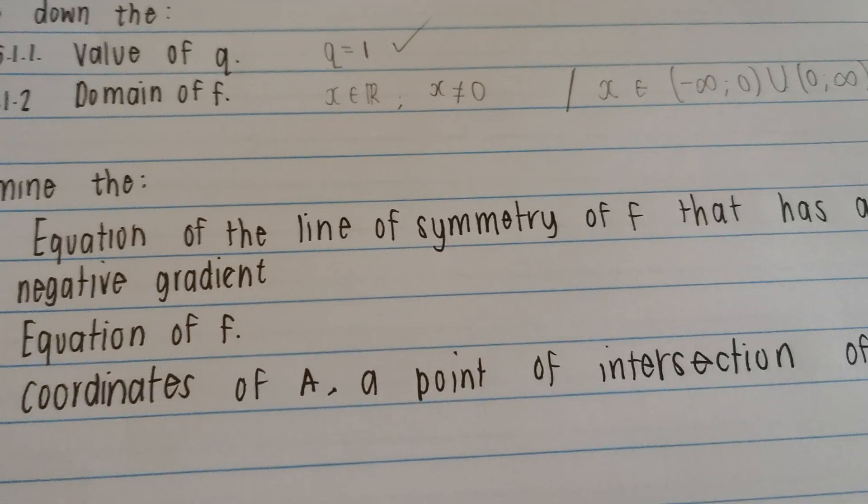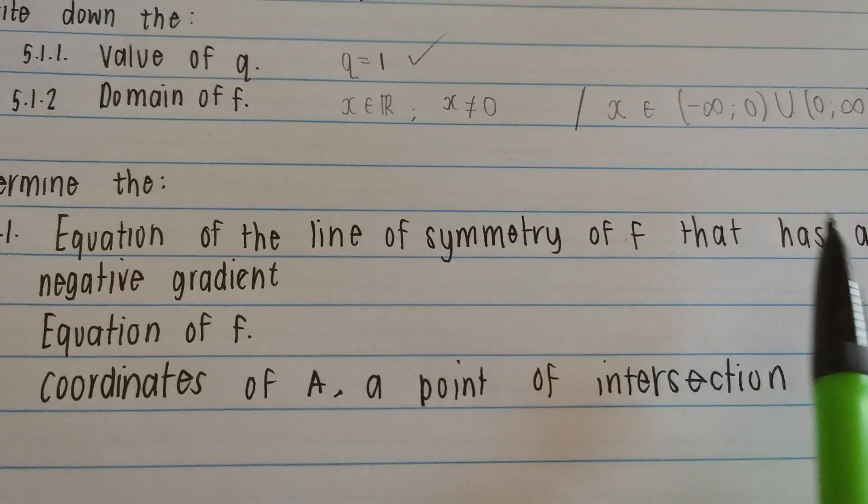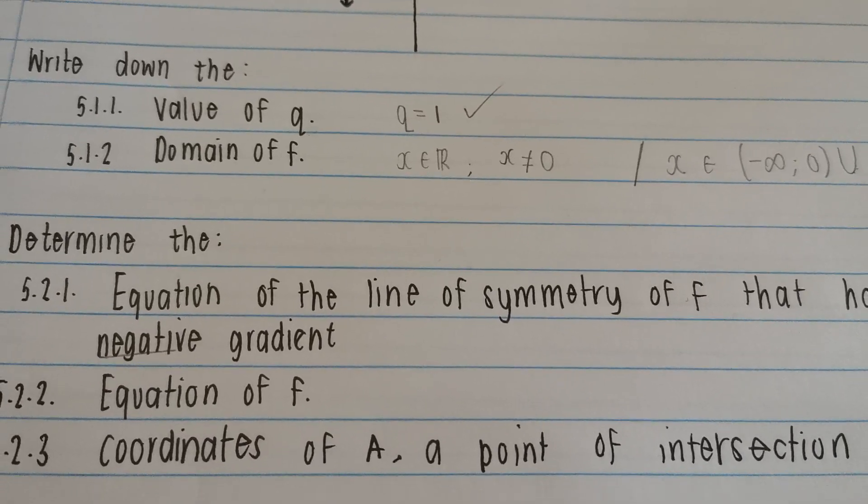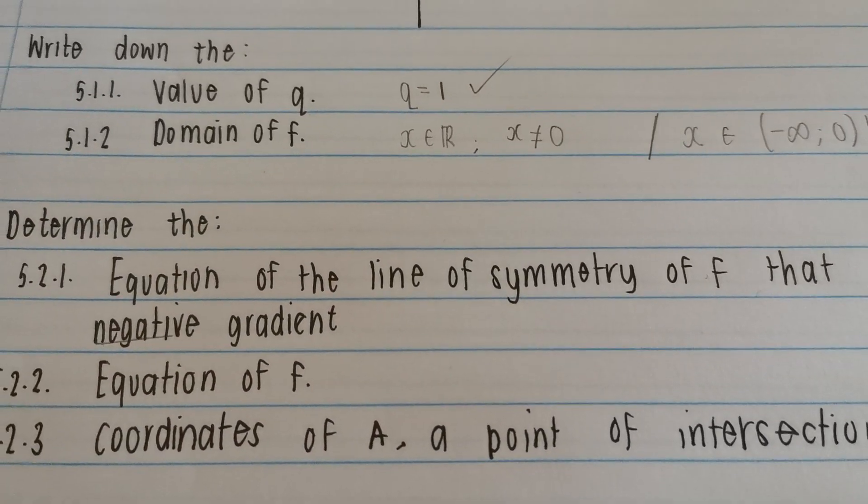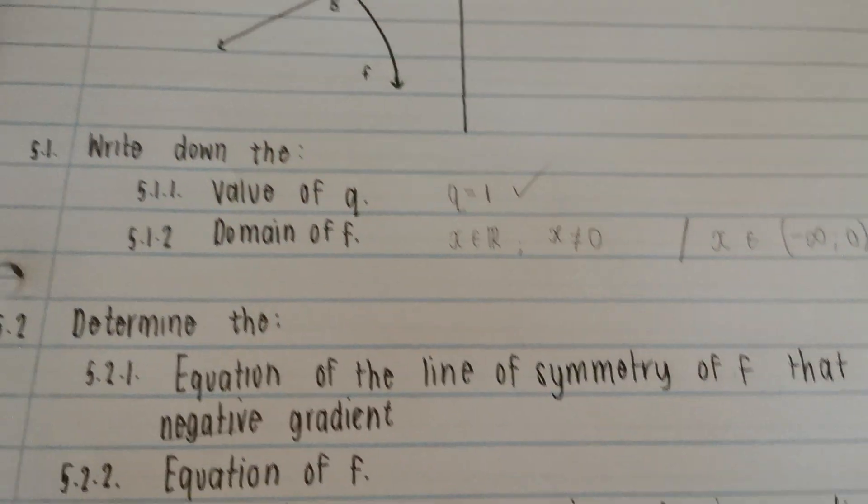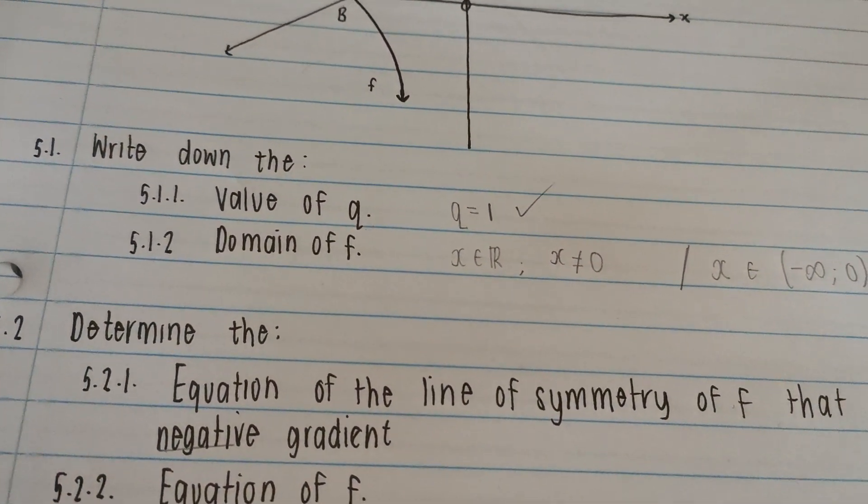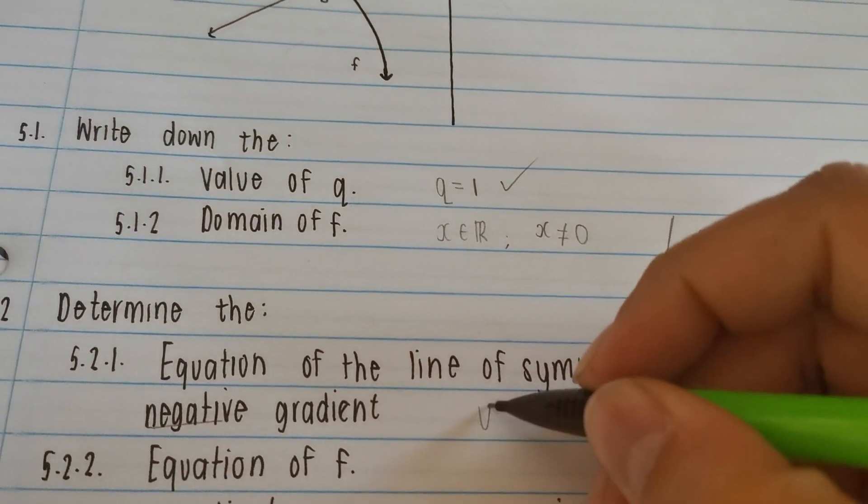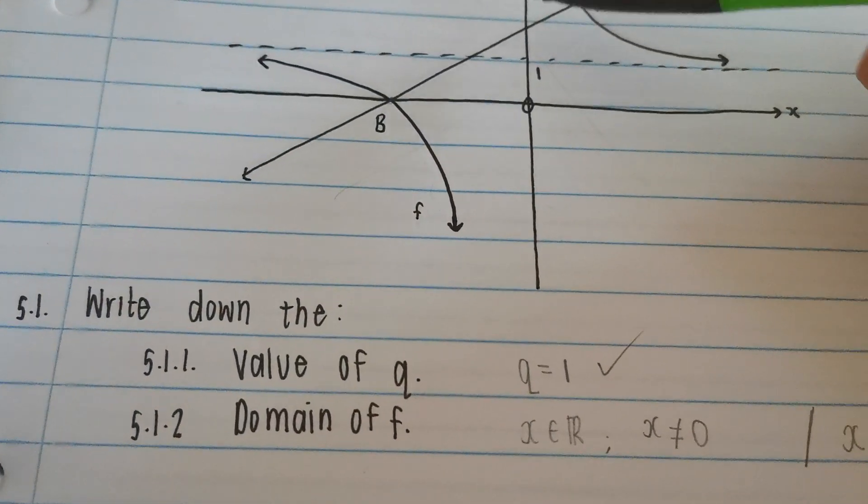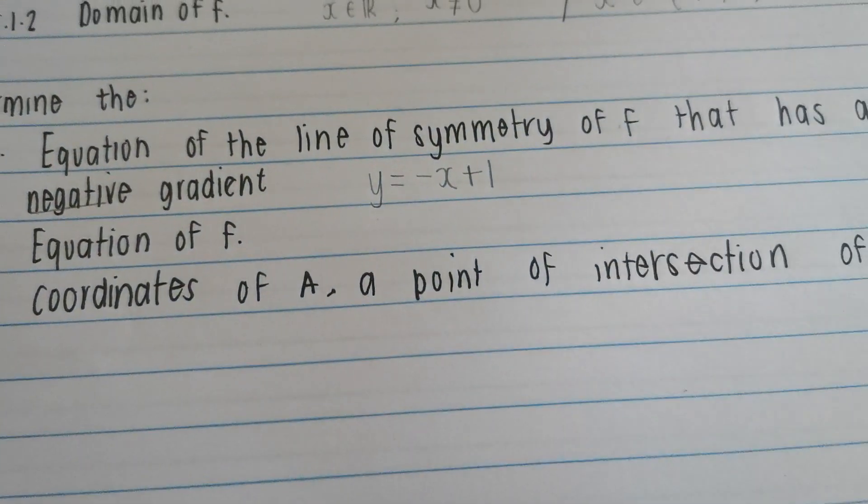Let's continue. It says determine the equation of the line of symmetry of f that has a negative gradient. Now we know there's two of them. Equation of the line of symmetry. We know that there's two of them. There's one going to be going up that way. And one going down that way. So we want the negative one. So all you've got to do is you write y is equal to negative x. And then you say plus or minus whatever the asymptote is. In this case, our asymptote is 1. So plus 1 and we are done.